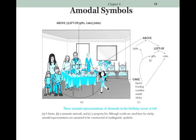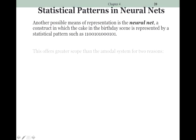Here's an amodal representation of what's going on. It might be spelled out like this: 'above, left of, gifts and cake is the table' — meaning the gifts and cake are on top of the table, and the gifts are to the left of the cake. The cake is then represented as a property list of features: frosting, candles, sticky, and sweet. Part A at the top is the frame — it looks like computer code because that's how we try to represent it. Part B is a map of what's going on, and the feature list is just a list of the things that make a cake a cake.